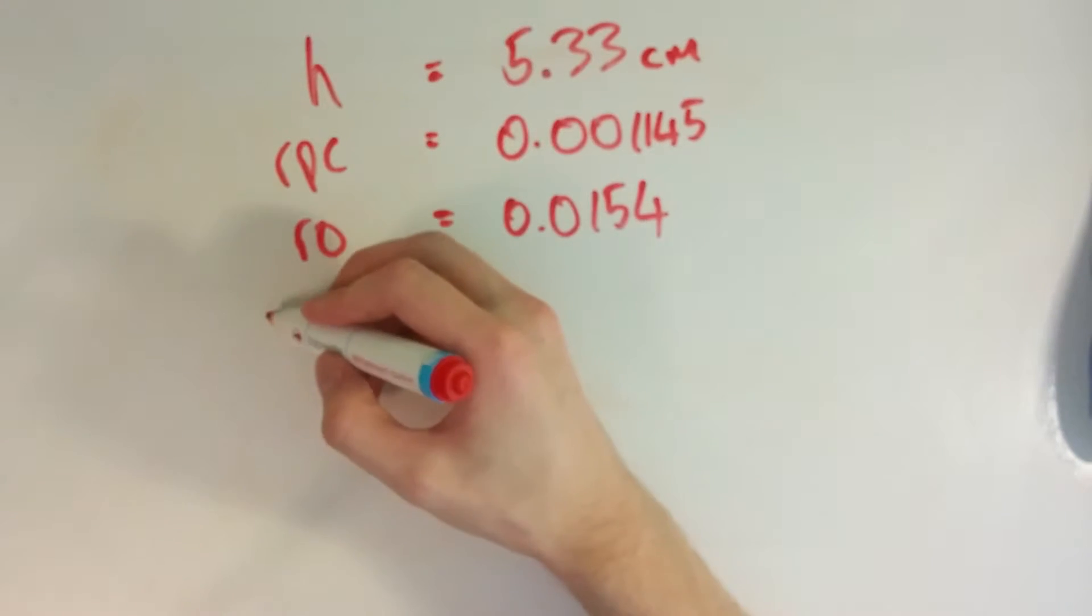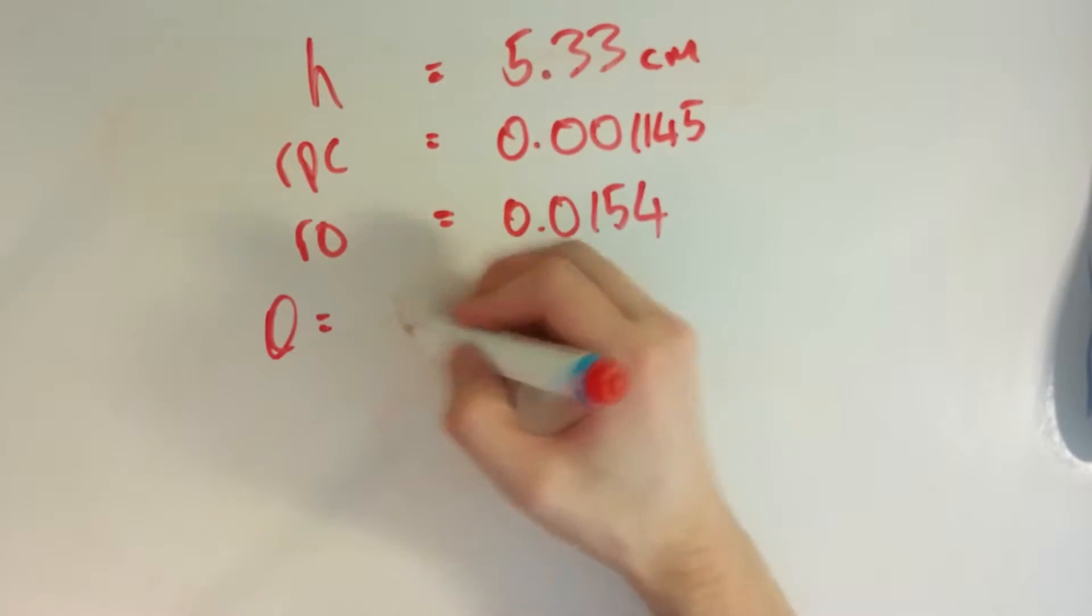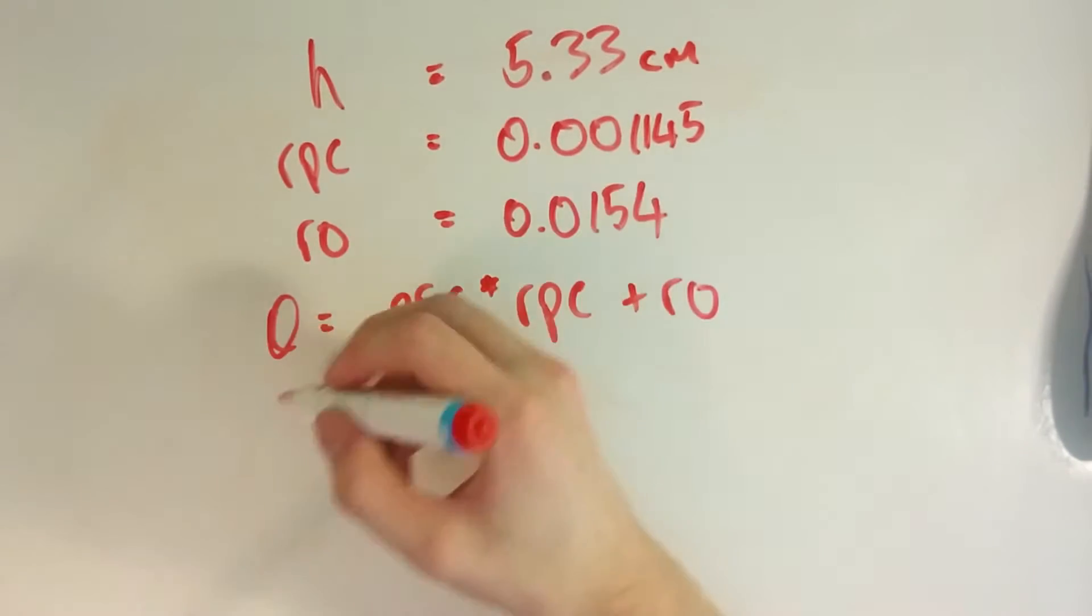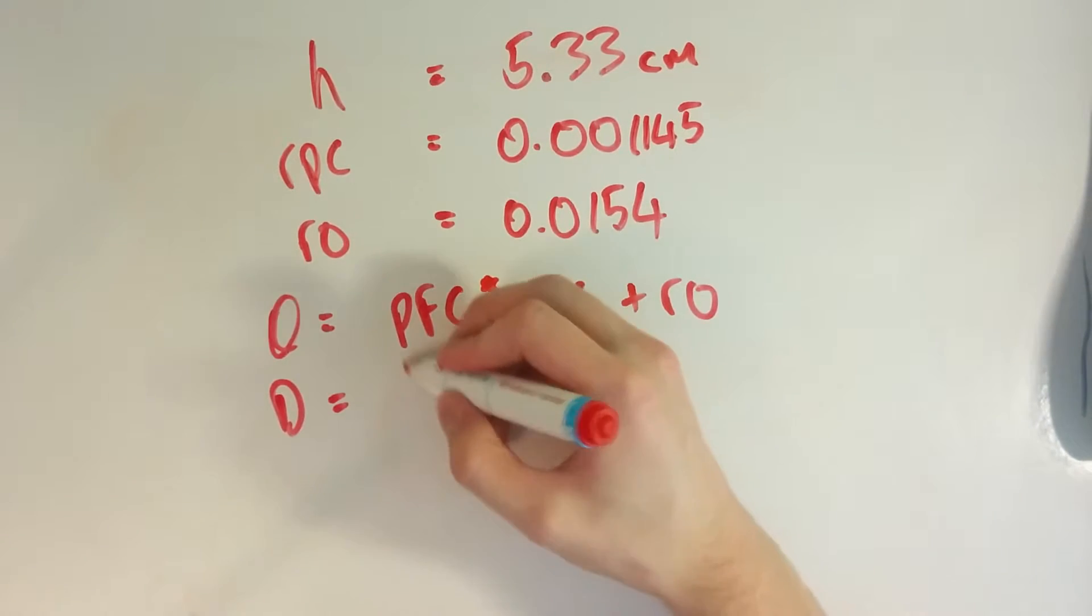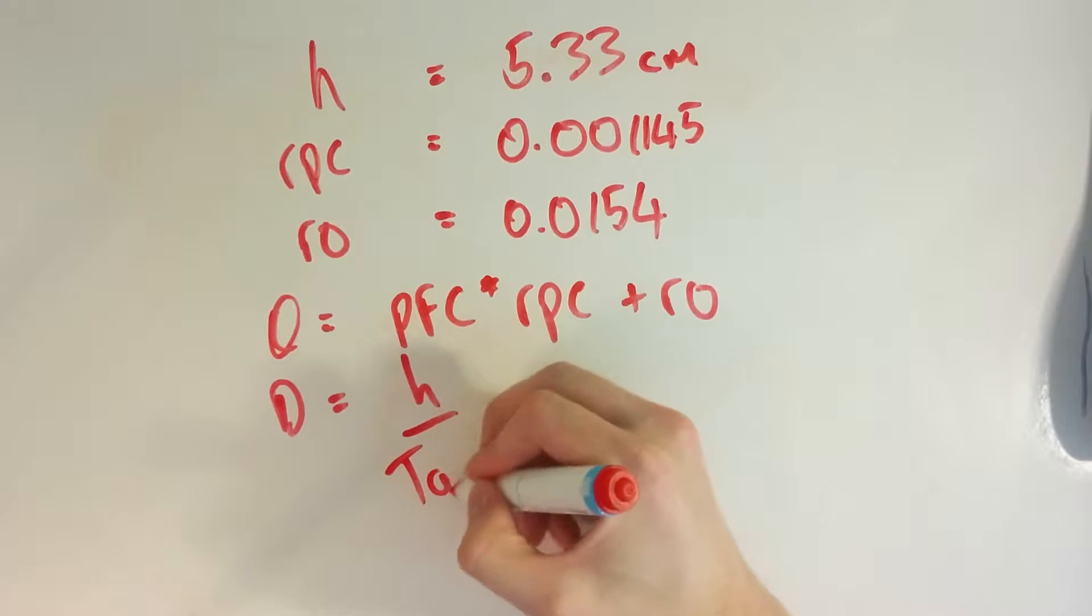So we have theta, and then the distance which you're trying to measure, which is the whole point of the project, is h over tan theta.